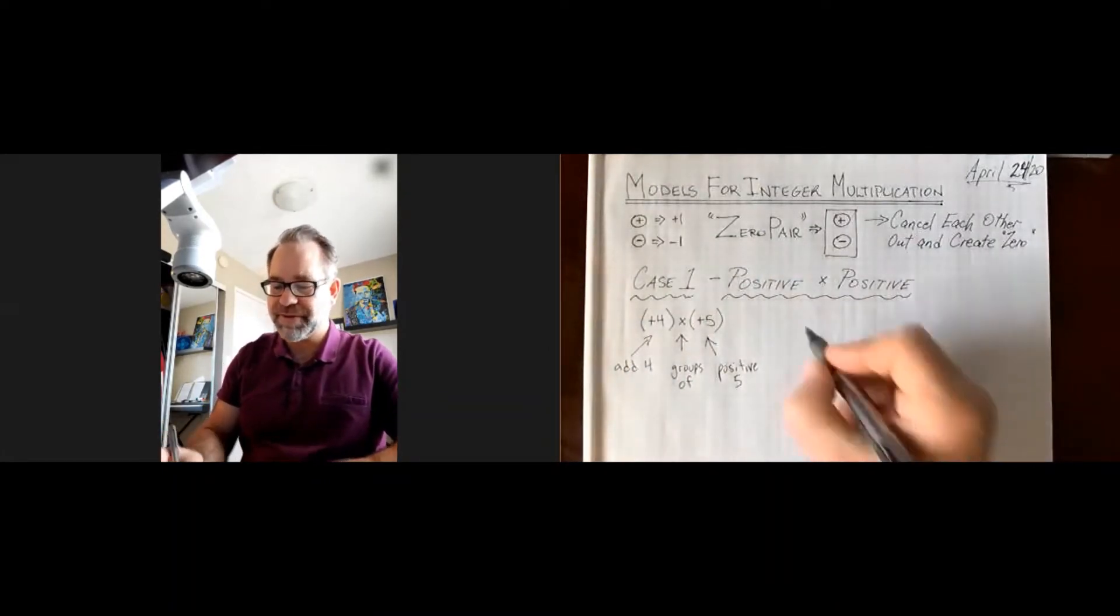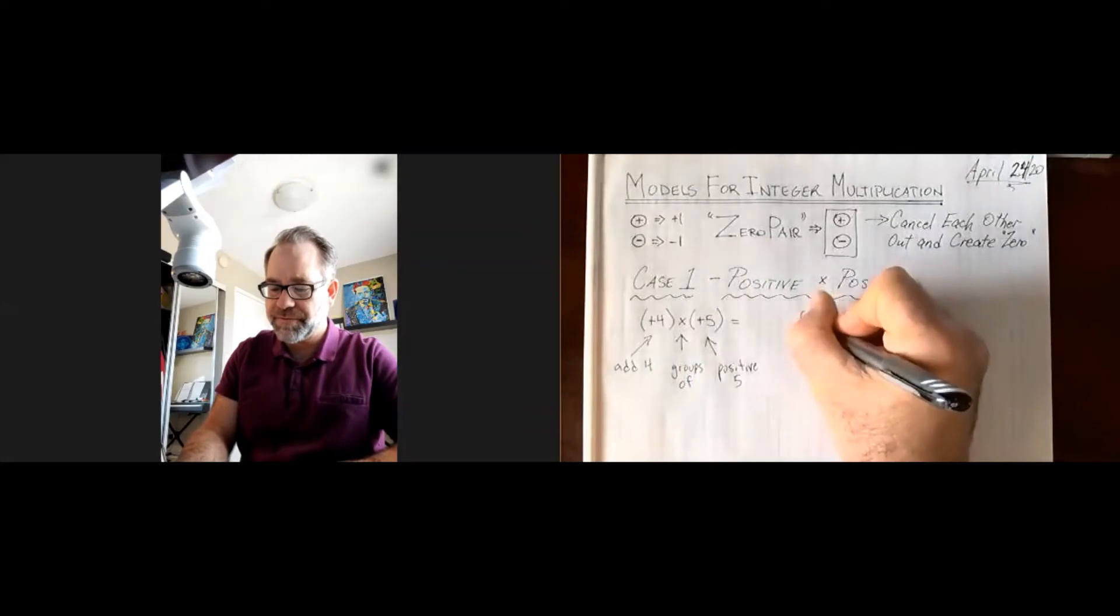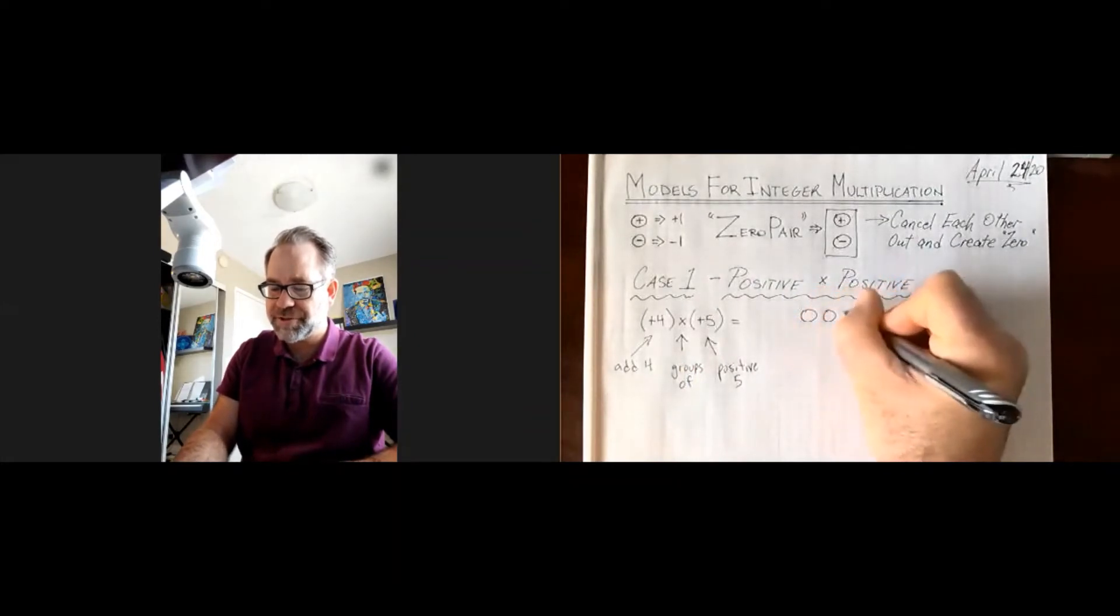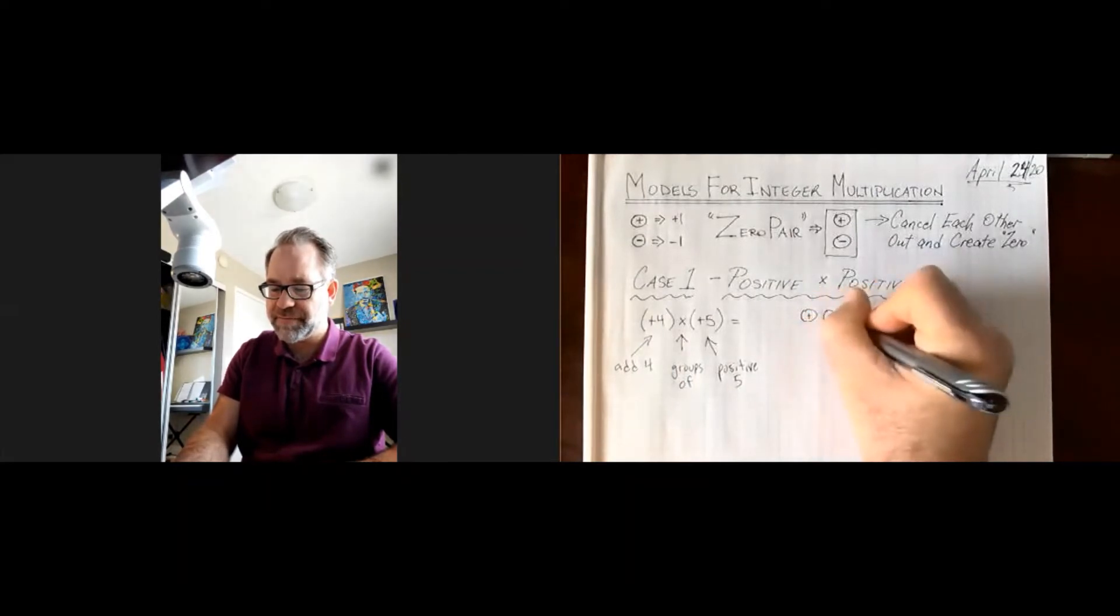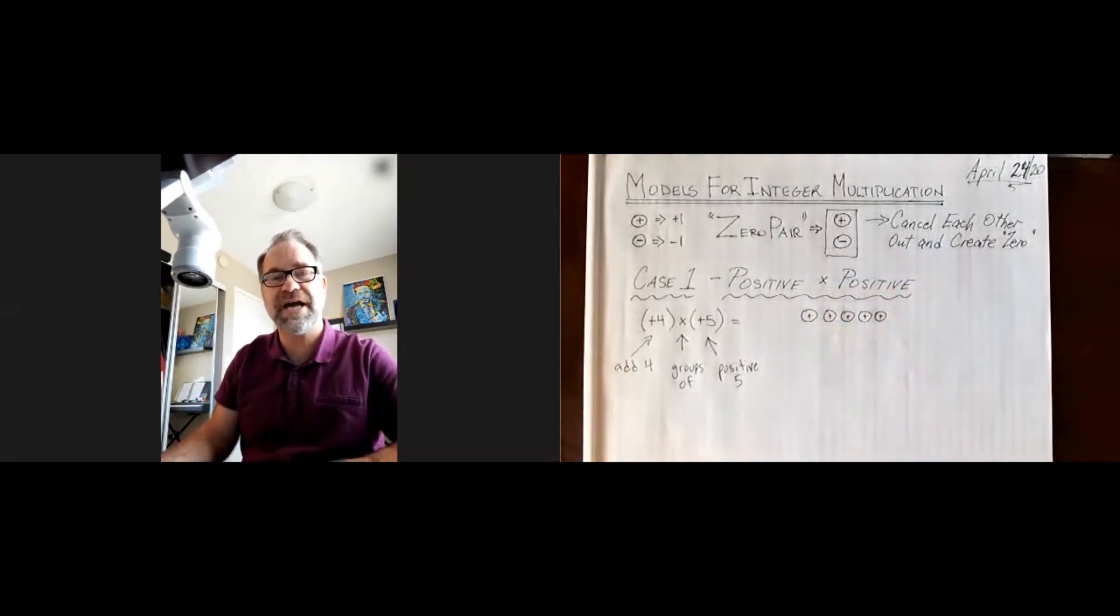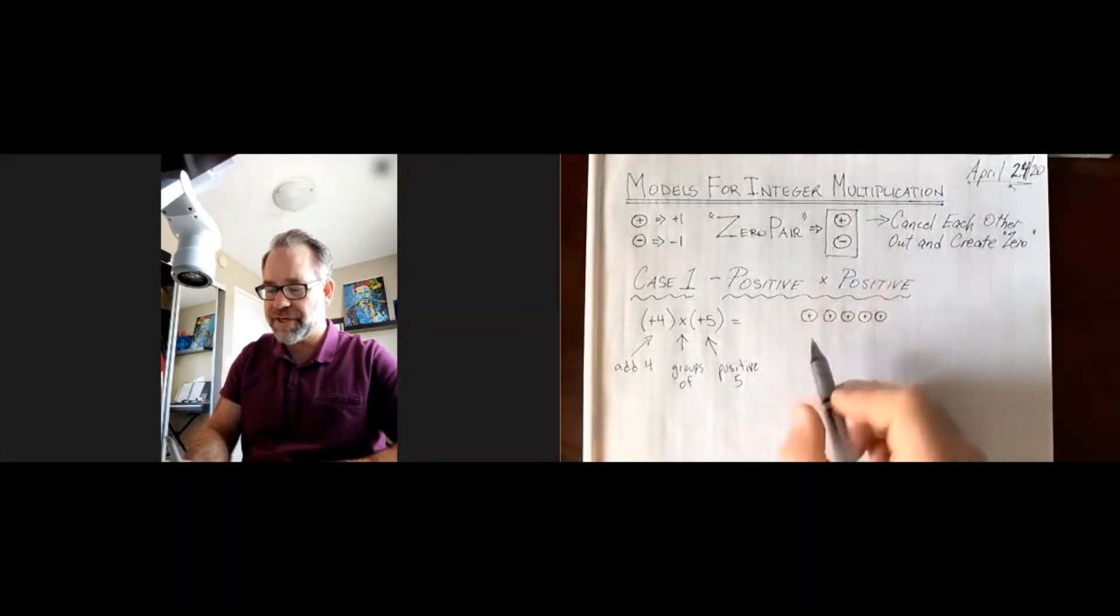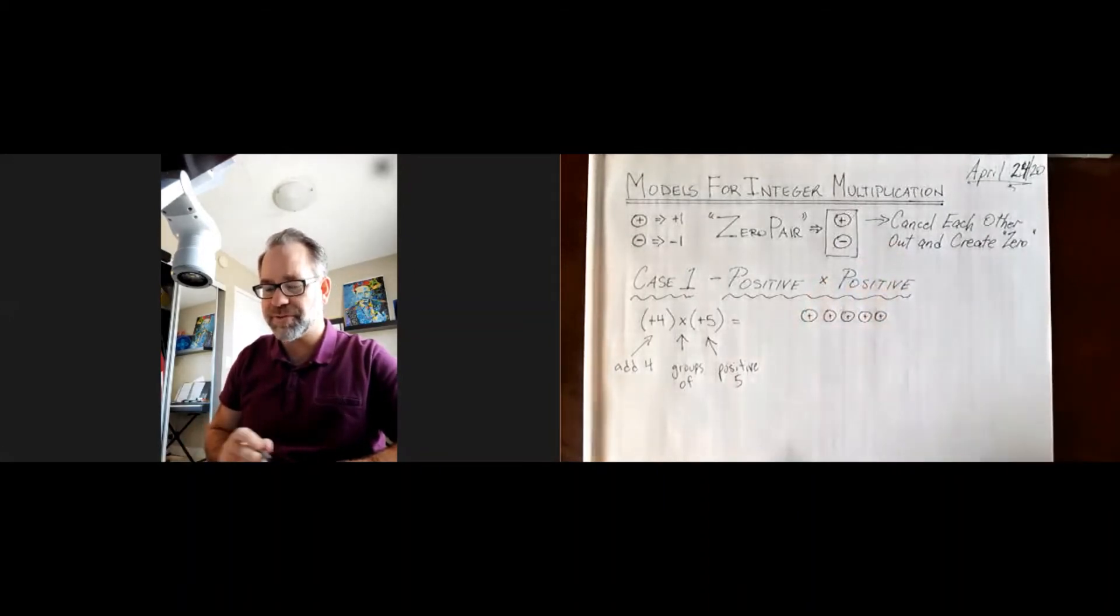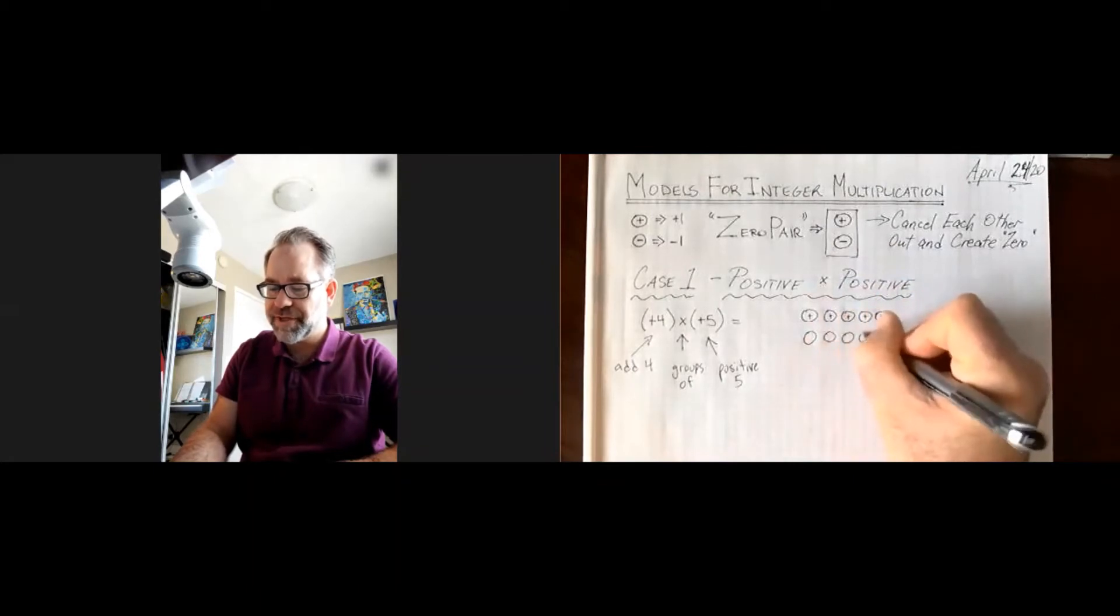And in order for our model to be correct, all of these elements need to be visible in our model somewhere. So we're going to start with 1, 2, 3, 4, 5. I'm going to make those all positive. Take your time when you're doing your models, do them nice and neat. I like to do my groups this way vertically and the number in each group horizontally.